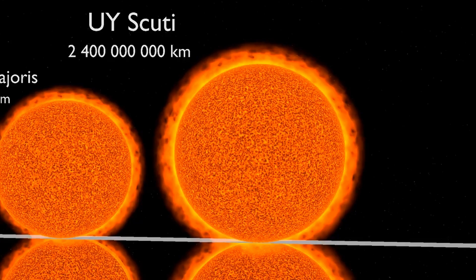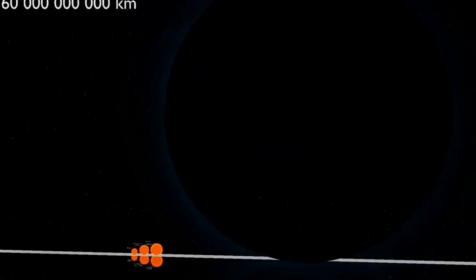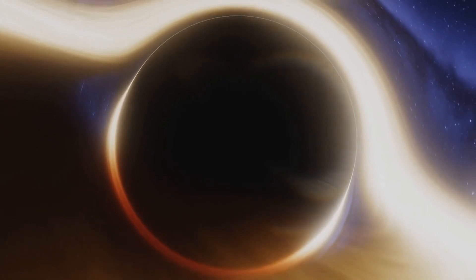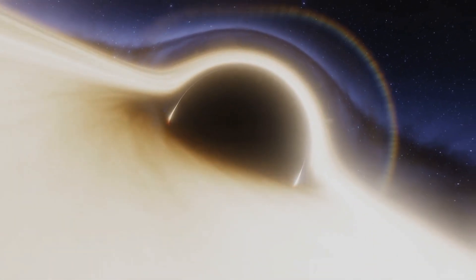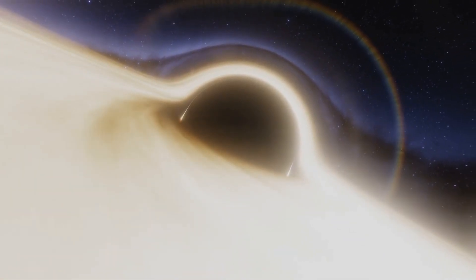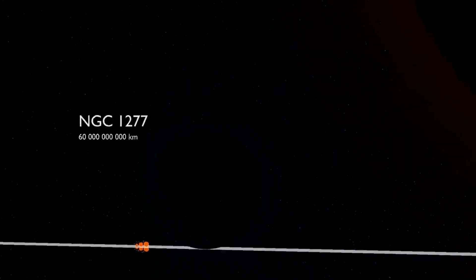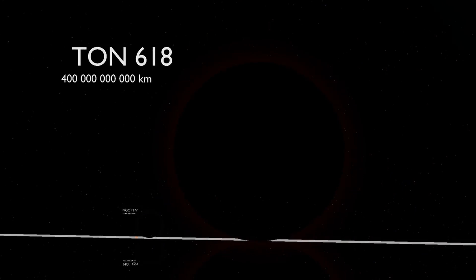Moving on, we leave the realm of stars. NGC 1277 is a lenticular galaxy located in the constellation Perseus. At its center is a supermassive black hole, with a diameter 42,850 times that of the sun. Its mass is estimated to be between 20 and 50 billion times the sun's mass. Next up is an even larger black hole, Quasar Ton 618.